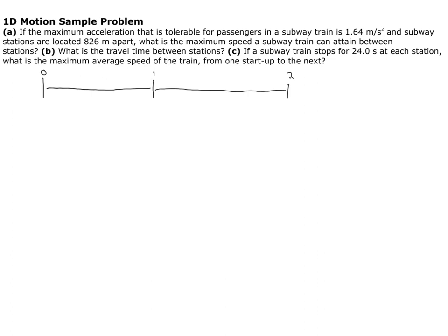Here we have information about a subway. We're told it has some maximum possible acceleration of 1.64 meters per second squared. We're also told that the distance between stations is 826 meters. In part A, we're asked what is the maximum speed the subway can attain?